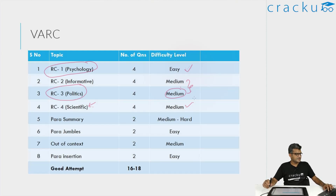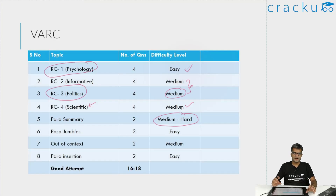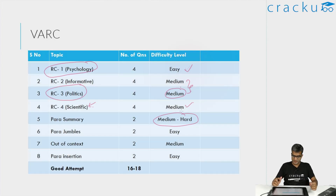Coming to the verbal ability section: in verbal ability, I think para summary was definitely on the medium to hard side. I was not able to get them correct — I was able to eliminate one or two options, but amongst the remaining options I was not able to pick the right one. Normally I do para summaries quite well, but here the options were also slightly tricky. There were two or three options which were close to each other.